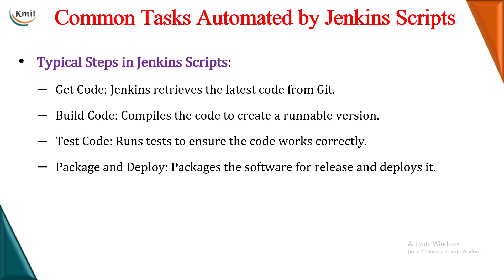The second thing is build code. When it gets an updated code from GitHub, it will automatically compile that code and convert it into an executable version. After converting into executable version, the project will be automatically tested by Jenkins, making sure that there are no errors. If there are errors, it also makes sure to notify the developers via email. The next step is it will add all the necessary packages required for your software for the deployment environment and automatically deploy the project into whichever container or site you want.